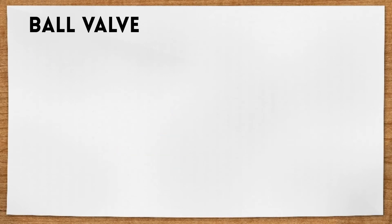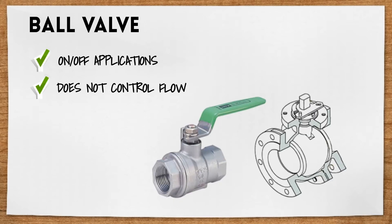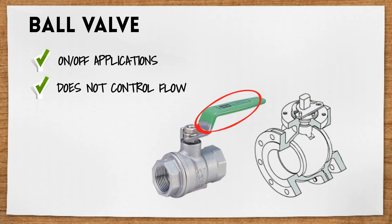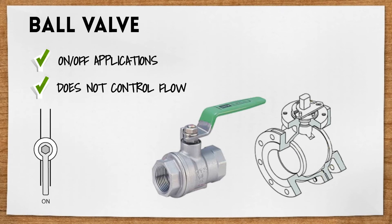Ball valves, much like gate valves, are used for on-off applications, not to control flow. Inside, there's a ball with a hole running through it. The valve is open when the ball's hole is in line with the flow, and it is closed when it's pivoted 90 degrees by the valve handle. It has a lever handle — the handle is straight in alignment with the flow when open and perpendicular to it when closed, making for easy visual confirmation of whether or not the valve is open or closed.